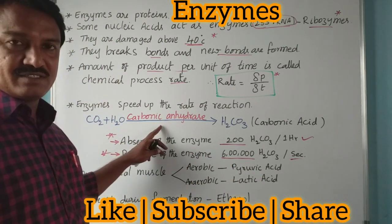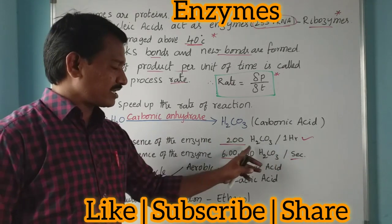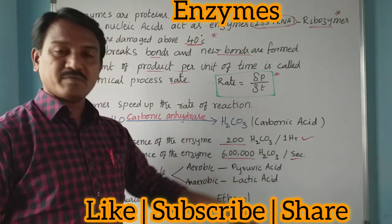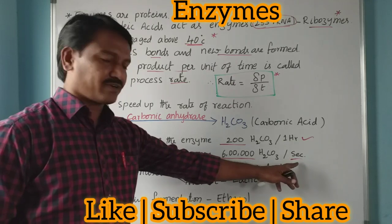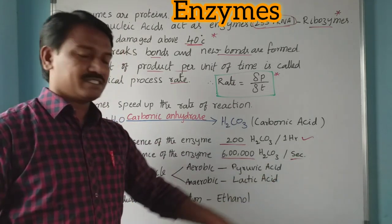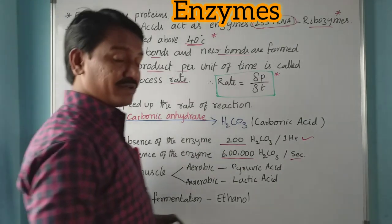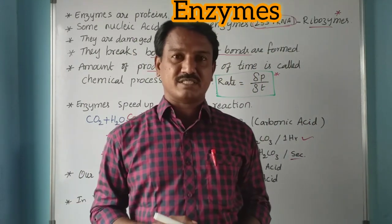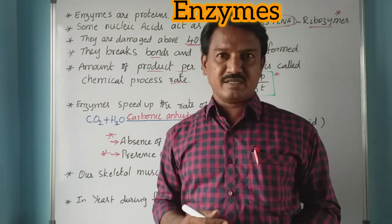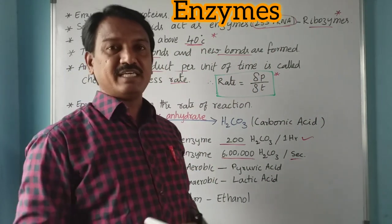So in the absence of carbonic anhydrase, only 200 H₂CO₃ molecules form per hour, but in the presence of the enzyme, six lakh molecules form per second. These enzymes are also involved in metabolic processes and chain reactions — like chemical pathways in the body.